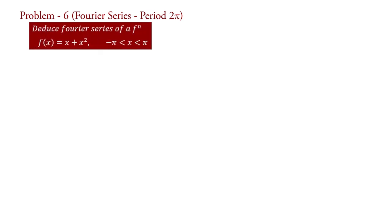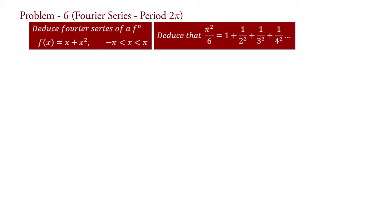Take a problem: deduce the Fourier series of a function f(x) = x + x² for −π < x < π, and deduce that π²/6 = 1 + 1/2² + 1/3² + 1/4² + so on. It is clear from the expression that the given function is neither even nor odd.